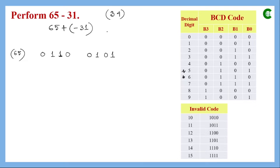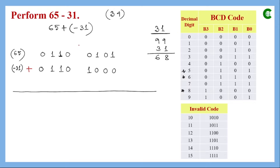To find the 9's complement of 31, we subtract from 99: the result is 68. So 68 is the 9's complement of +31, and the 9's complement representation of minus 31. Now we represent 68 in BCD: 6 is 0110, and 8 is 1000. After representing both decimal numbers in BCD, we proceed to perform normal BCD addition.